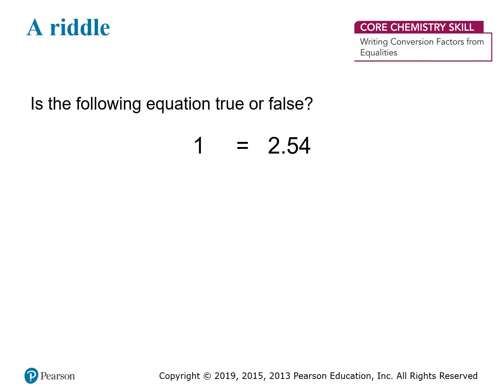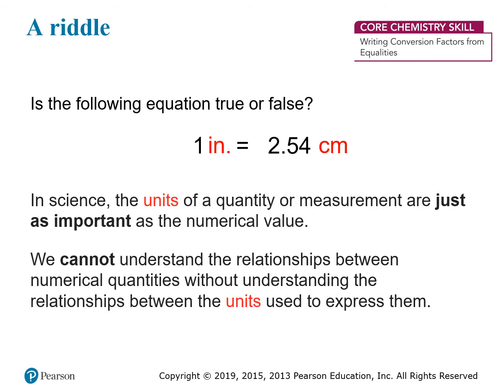1 what? 2.54 what? The fact is, if you're measuring in inches on the left-hand side and centimeters on the right-hand side, this equation is true, because 1 inch equals 2.54 centimeters. In science, the units of a quantity or measurement are just as important as the numerical value. You cannot understand the relationships between numerical quantities without understanding the relationships between the units used to express them.